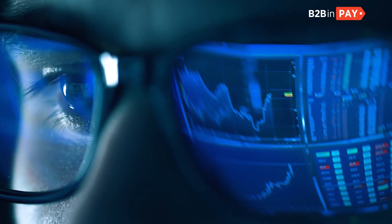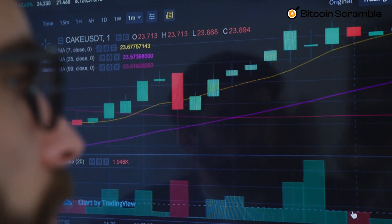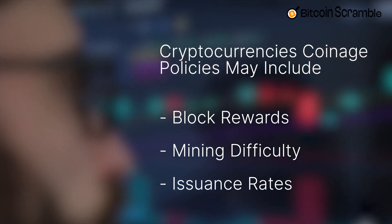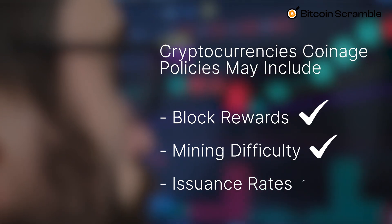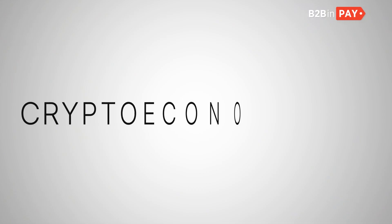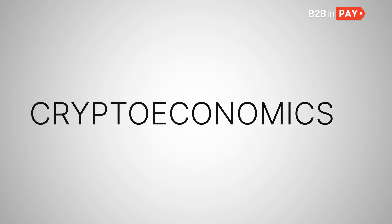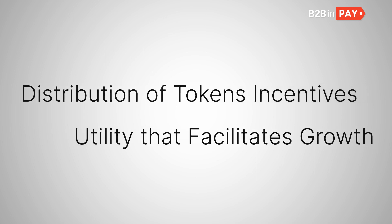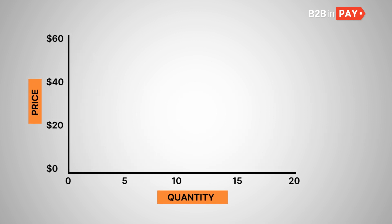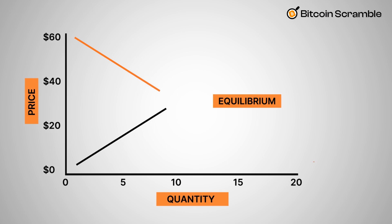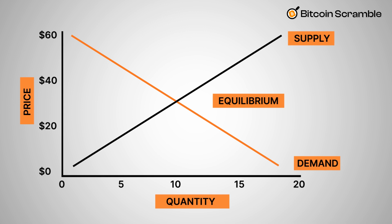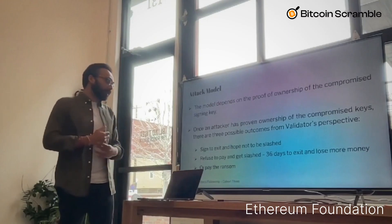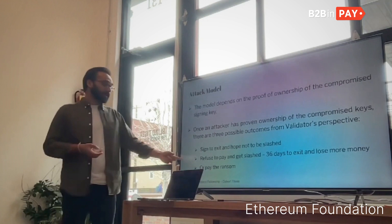Cryptocurrency economic structure determines the incentives that motivate investors to acquire and hold a particular coin or token. The coinage policy of each cryptocurrency is unique, as it is with all fiat currencies. Crypto economics is concerned with determining two things: the incentives that influence the distribution of tokens, and the utility of tokens that determines their demand. A utility that provides the right incentives can help projects to grow in price as demand and supply are significantly impacted.